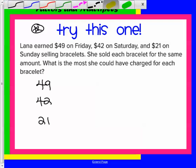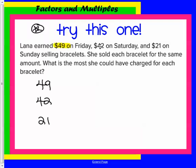Let's read this one together. Lena earned $49 on Friday, $42 on Saturday, and $21 on Sunday selling bracelets. She sold each bracelet for the same amount. What's the most she could have charged for each bracelet? If we find the greatest common factor, we'll figure out how much she would charge if she charged the most. The factors of 49 are 1 and 49. Does 2 work? No. 3, 4, 5, and 6 don't work, but 7 times 7 is 49. So the factors of 49 are 1, 7, and 49.